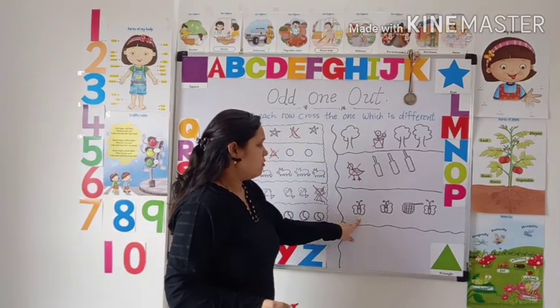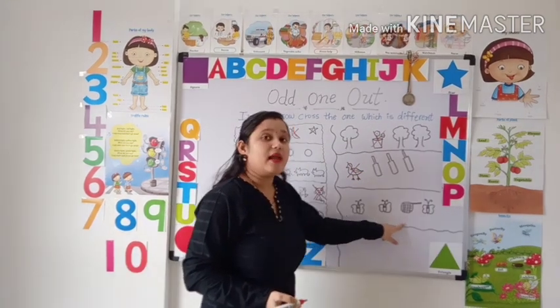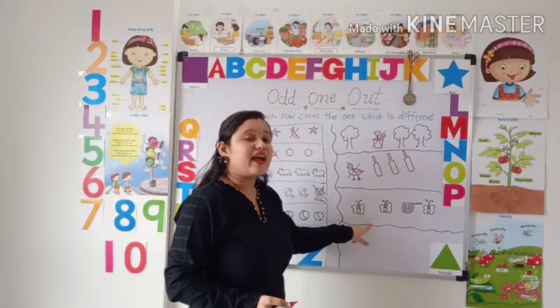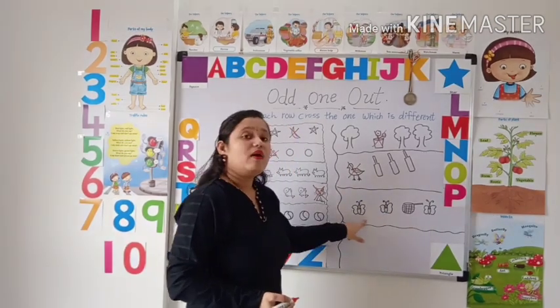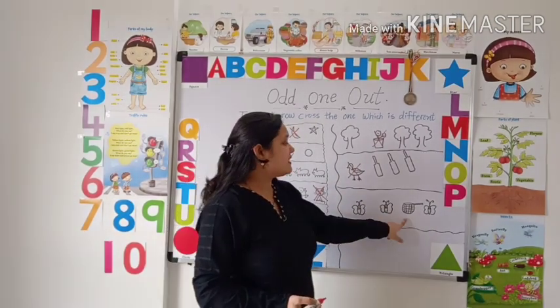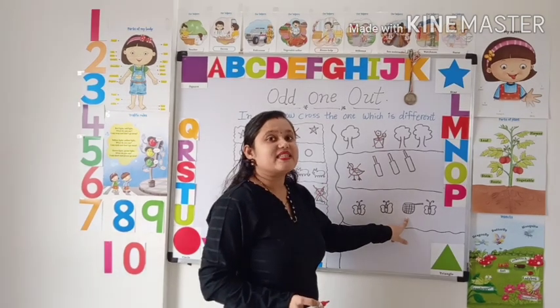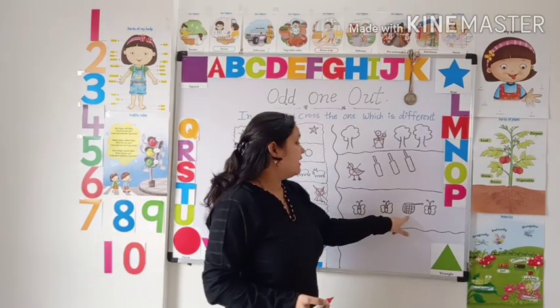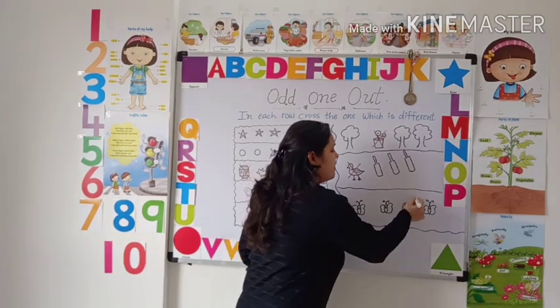Now, what is this? These are butterflies. But what is this? Yes, this is a net. It is the odd one out.